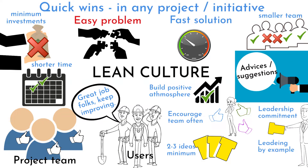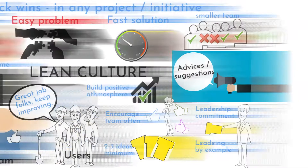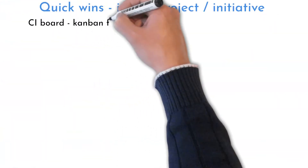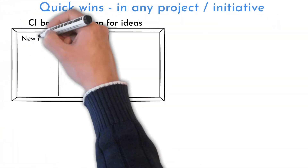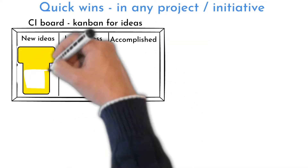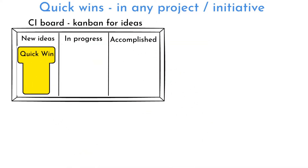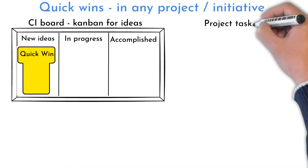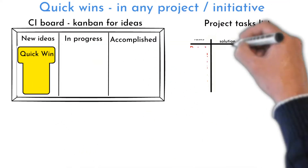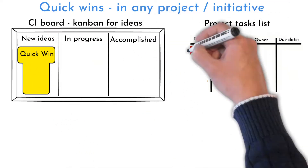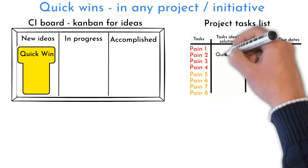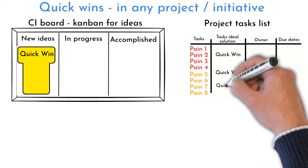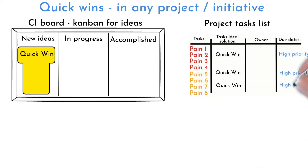Quick win ideas can be submitted verbally, but it is still good to have some tracking. A CI board can be a good tool. I also use task lists to track ideas during the project. The team identifies quick wins and addresses them as the highest priority.